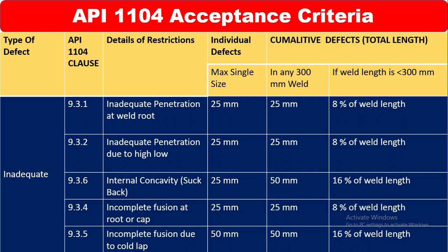Then clause 9.3.3 covers internal concavity or suck back. The maximum single size acceptance criteria is 25 mm. In any 300 mm weld it is 50 mm. And if the weld length is less than 300 mm, it is 16% of the weld length.